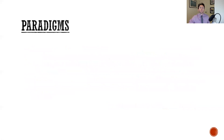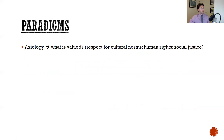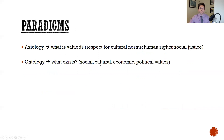Now let's go into what are the patterns that guide these transformative sequential designs. First, we have to think from an axiological standpoint about what is valued within this particular context with respect to cultural norms, human rights, social justice, etc. Secondly, from an ontological standpoint, what exists or how do we know what actually exists within social, cultural, economic, and political contexts? And that's typically what is valued in those particular areas.